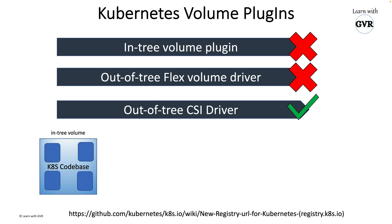Let's understand what intree and out-of-tree volume plugins mean. Consider the Kubernetes codebase available on GitHub. If you wanted to add a new pod volume type, the intree volume plugin approach requires you to implement it using Golang, modify the Kubernetes codebase, add the feature, and raise a PR. It gets tightly coupled with the Kubernetes codebase.